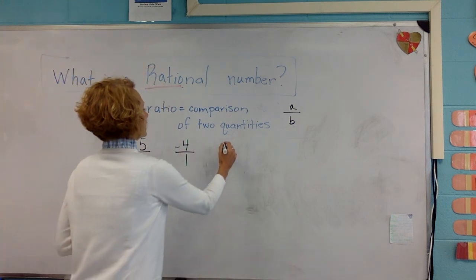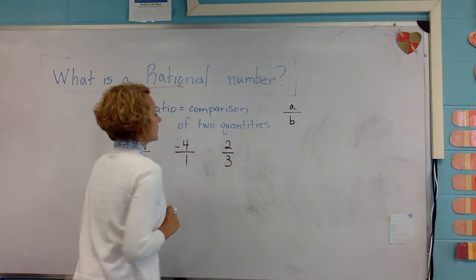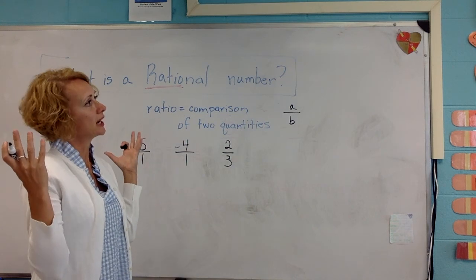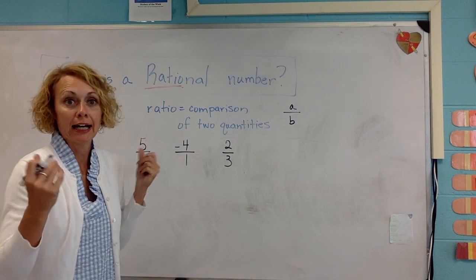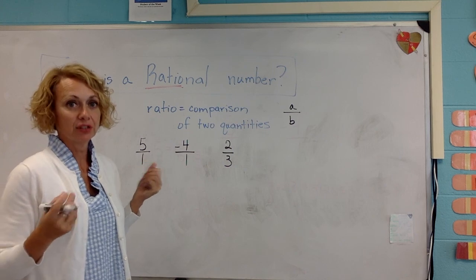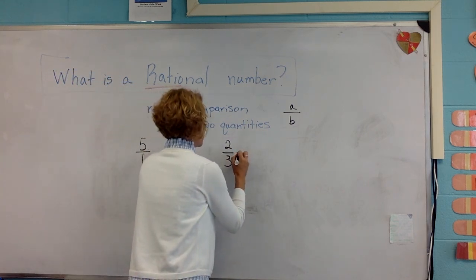So what if I give you a number like two-thirds and I ask you if it's a rational number, you would think is it a fraction? Yeah. Is two-thirds written as a fraction? Yes it is. So it's definitely a rational number.